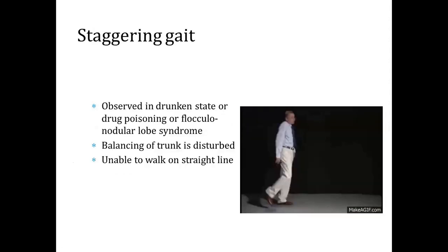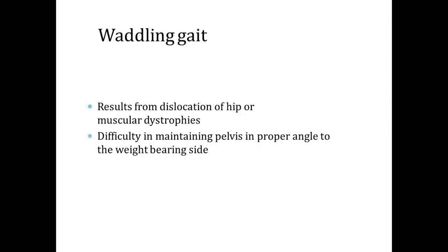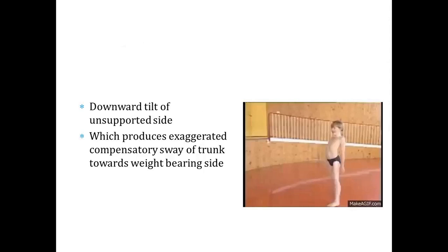Staggering gait, observed in a drunken state — also called drunken gait — or in drug poisoning or flocculonodular lobe syndrome: balancing of the trunk is disturbed and the person is unable to walk in a straight line. Waddling gait results from dislocation of the hip or muscular dystrophies, with difficulty maintaining the pelvis at the proper angle to the weight-bearing side — downward tilt of the unsupported side producing an exaggerated compensatory sway of the trunk towards the weight-bearing side.